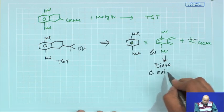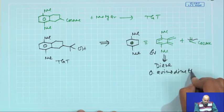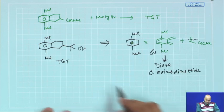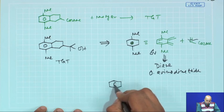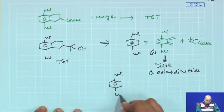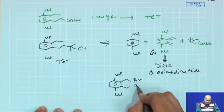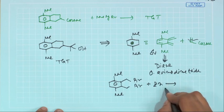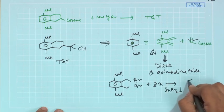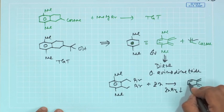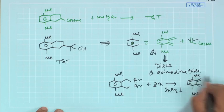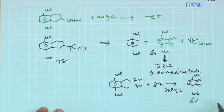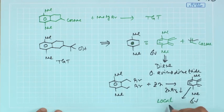This diene is named ortho-quinodimethane. The usual way to generate it is to take the corresponding dibenzyl bromide, react with metallic zinc — ZnBr₂ precipitates — and you get the ortho-quinodimethane as a diene, which you react with the dienophile. This is perfectly sigma-v, and this gives the local symmetry part in the target molecule.